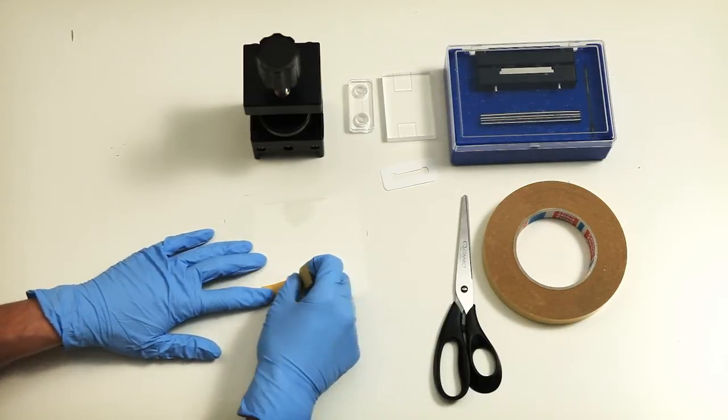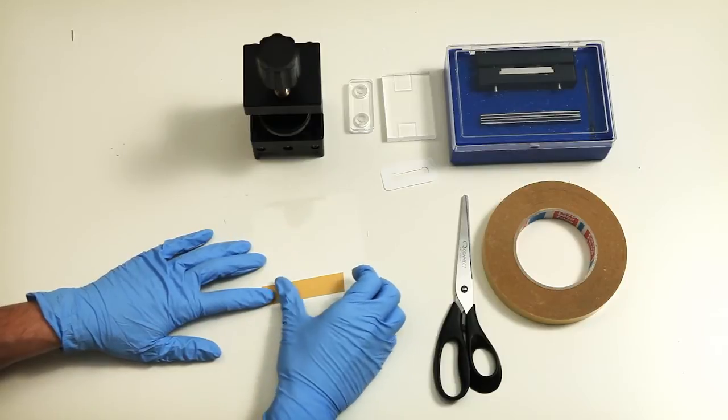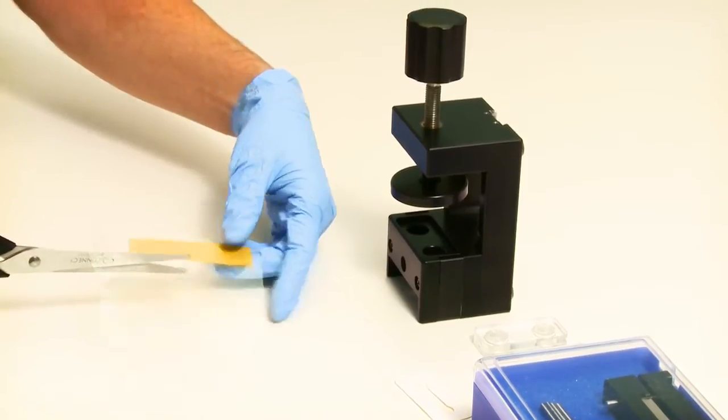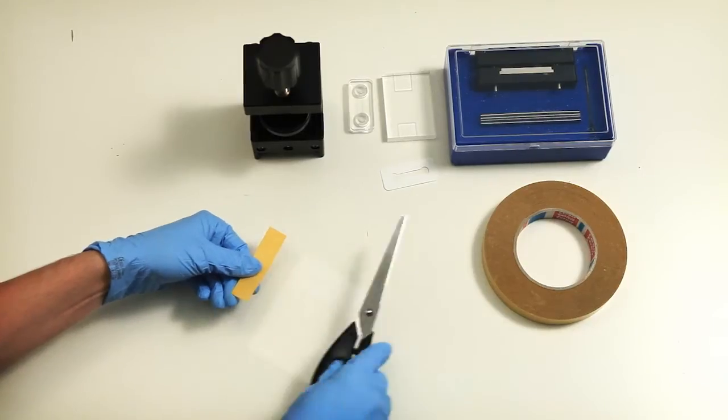Attach the tape to the back side of your sample, not the side with the active surface you want to measure, but the other side. Then cut out your sample so you have the size you need.